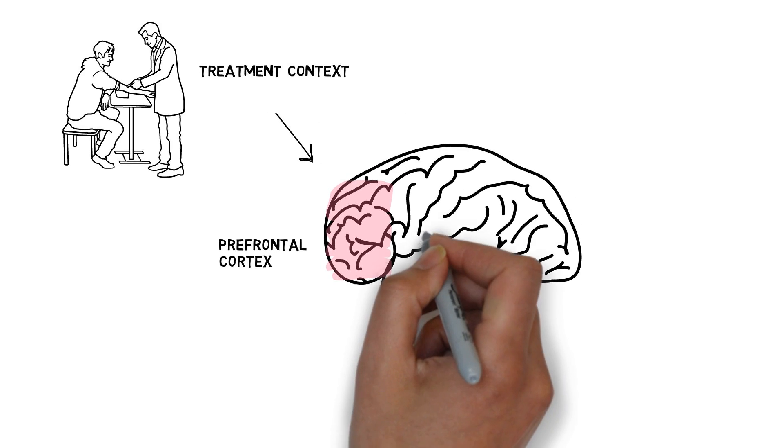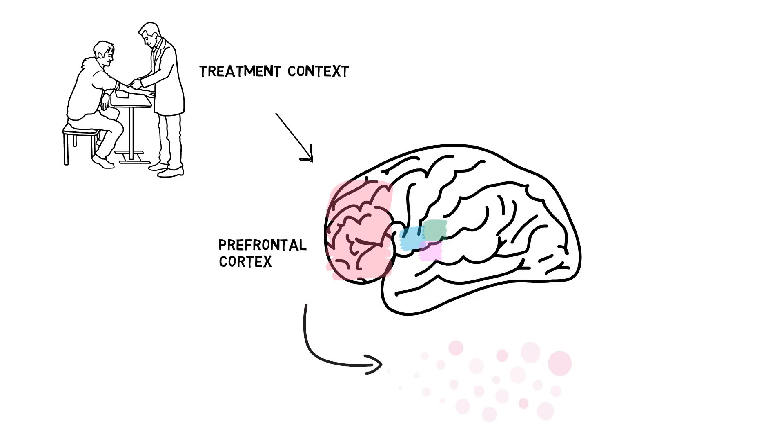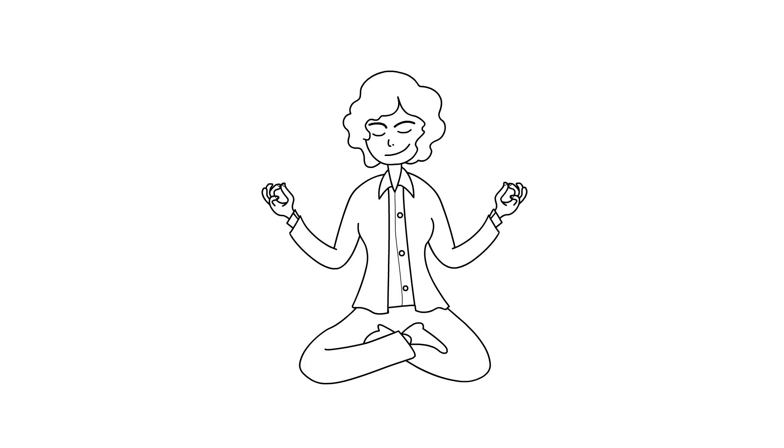The prefrontal cortex can then connect to other brain regions that are responsible for making neurochemicals, like dopamine, which signals pleasure, oxytocin, the cuddle hormone, and opioids. Yes, it's true your brain makes its own opioids naturally, which has a strong calming and anti-pain effect.